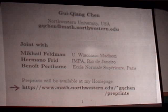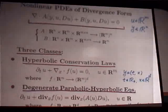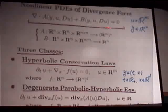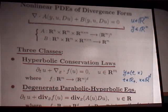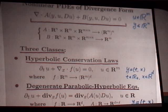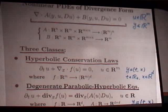Nonlinear partial differential equations of divergence form can be written down in the following form, where A and B are nonlinear mappings and u is in R^m — so this is a system of m nonlinear differential equations. Although the form is very simple, many important nonlinear PDEs arising from mathematics and various sciences such as physics, chemistry, mechanics, and engineering can be written in this form and its variants.